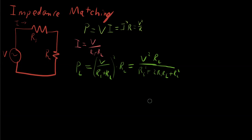And because that's still messy and there's a bunch of RL terms down here, let's just divide both sides of this fraction by RL because that doesn't change anything. And so we're going to divide by RL and we're going to get out V squared over RS squared over RL plus 2 RS plus RL.